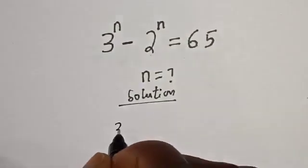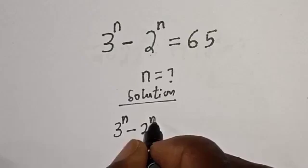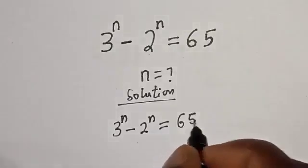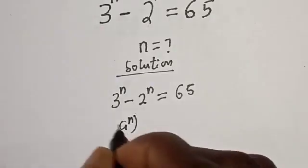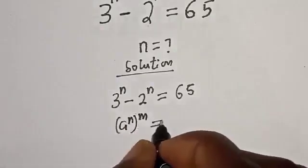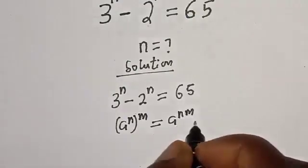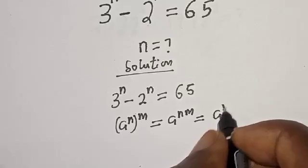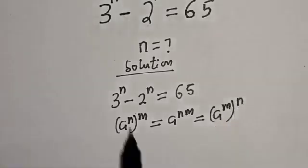We have the given question: 3 raised to power n minus 2 raised to power n is equal to 65. Take note of this exponential rule: a raised to power n, to the power of m, is equal to a raised to power n×m, which is also equal to a raised to power m, to the power of n.